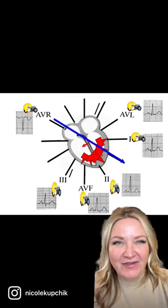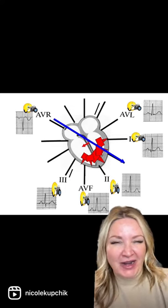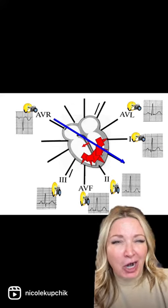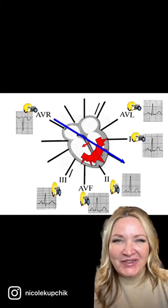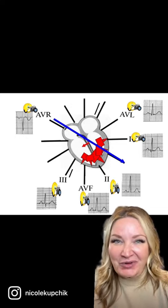Leads 1 and AVL look at the heart from the general direction of the left arm. So therefore, we're not depolarizing straight toward the left arm, but in general toward the left. So leads 1 and AVL will have an upright R wave. That's pretty normal.